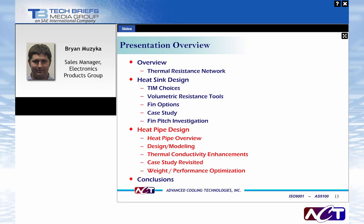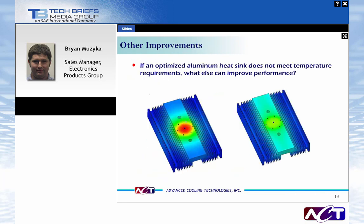In this section, we'll give an overview of heat pipes and performance predictions, designing and modeling with heat pipes, thermal conductivity enhancements in relation to heat sink design, and revisiting the case study with increased thermal conductivity. We'll also look at ways to reduce weight and optimize performance. The figure on the left uses bare aluminum while the figure on the right shows the enhancements possible with heat pipes — improved conduction and spreading of that concentrated load, allowing your fins to operate more efficiently and reducing the operating temperature of your electronics.